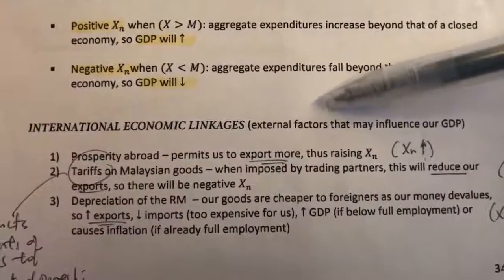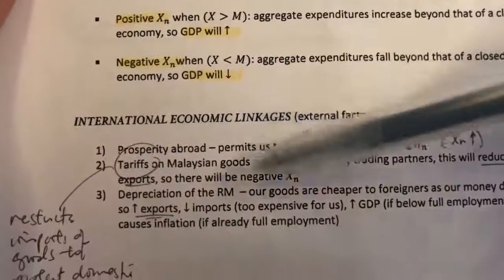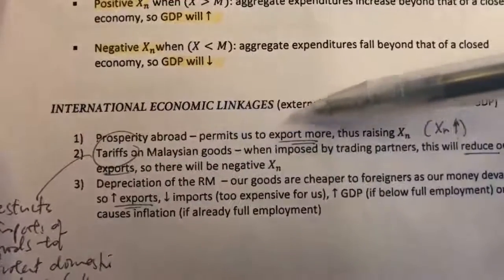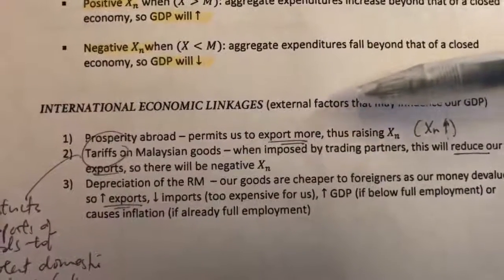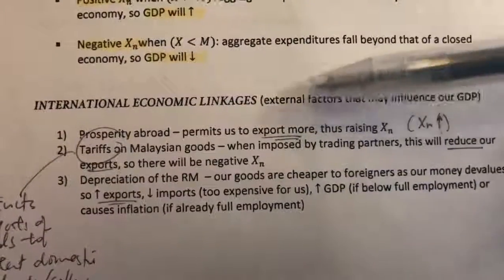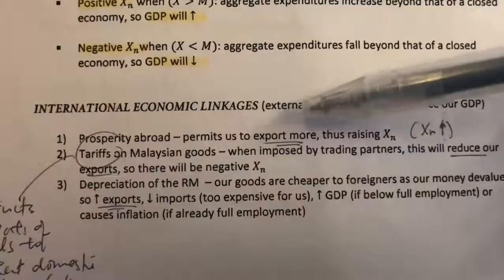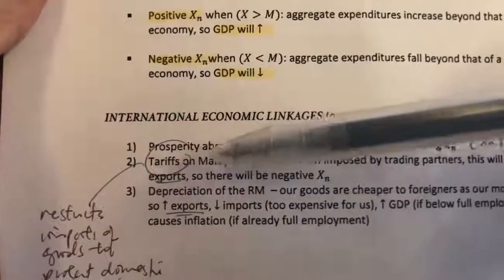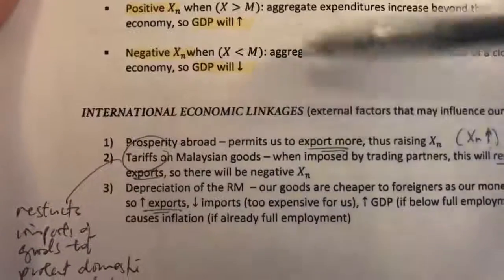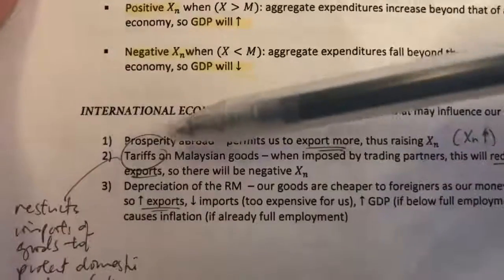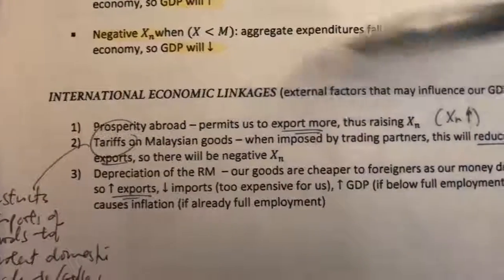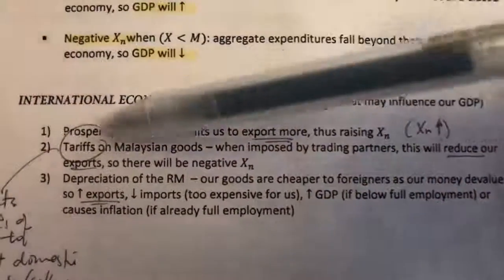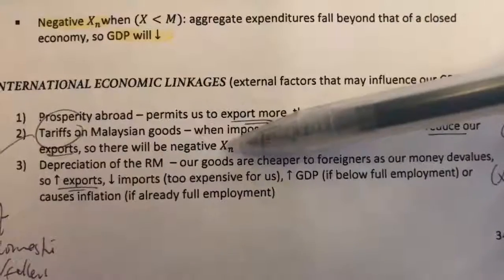Now, these are the external factors that may influence our GDP when it comes to imports and exports. I have listed three here. The first is prosperity abroad — this permits us to export more because our neighbours are richer and able to buy more of our products, leading to a positive XN. The second is tariffs, which is a tax on imports. When tariffs are imposed on Malaysian goods, our trading partners will not import as many Malaysian goods, reducing our exports and resulting in a negative XN.